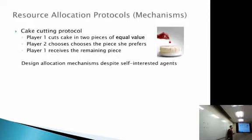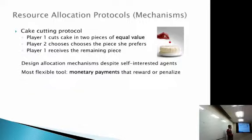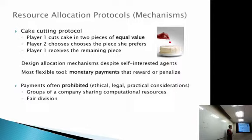We want to design allocation mechanisms despite self-interested agents. The most flexible tool used in mechanism design for this is monetary payments, which reward or penalize players so they behave as desired — VCG is an example. But payments are often prohibited for ethical, legal, or practical considerations.